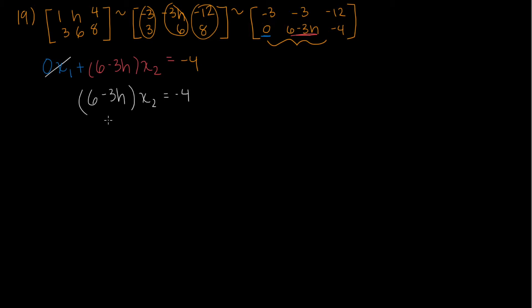Now, this system, remember this is part of the system that we have here. This system is only consistent if none of these values here equal zero. Why? Because if even just one of these equals zero, then this whole equation becomes zero equals negative four. And that is not true. That is a contradiction.